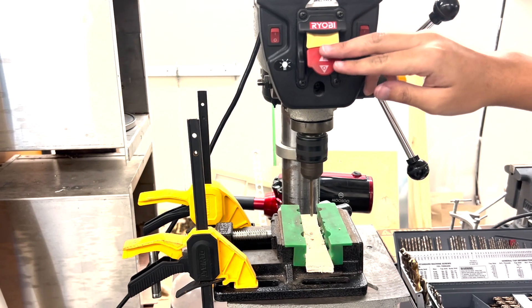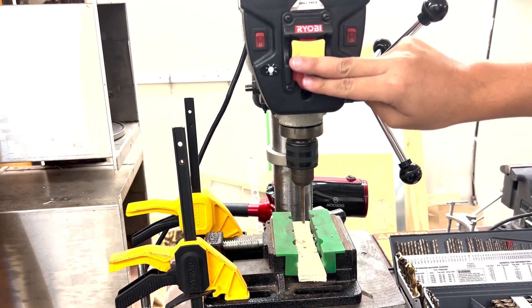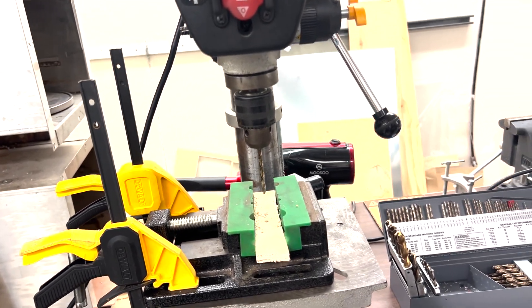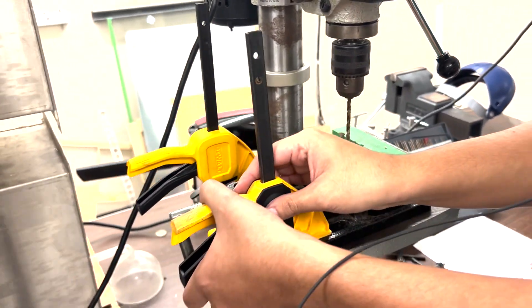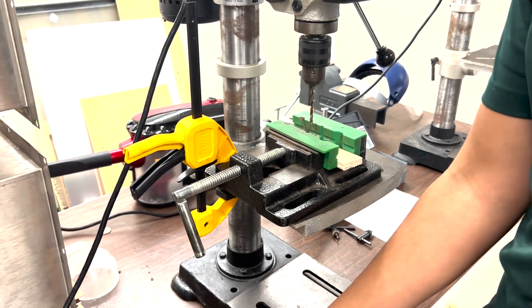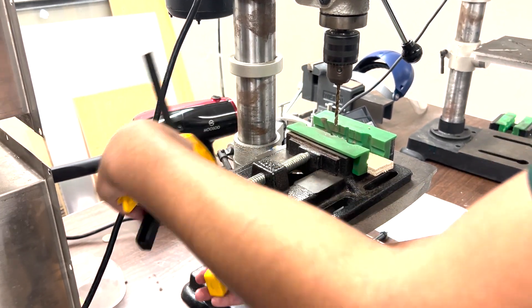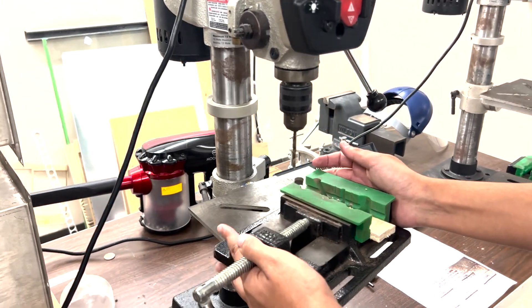Once you're done, switch the switch downward to turn off. Then once the bit stops moving, you can take the clamps off and move your material off the table.